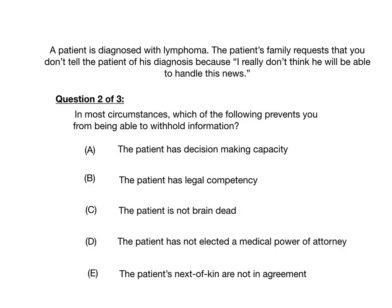Case fifteen, part two: In most circumstances, which of the following prevents you from being able to withhold information? A: The patient has decision-making capacity. B: The patient has legal competency. C: The patient is not brain dead. D: The patient has not elected a medical power of attorney. E: The patient's next of kin are not in agreement. The correct answer is A — the patient has decision-making capacity. In most circumstances, the reason you have to tell the patient is because they have capacity, and it is their right to know their diagnosis. You cannot withhold information unless one specific exception is met.